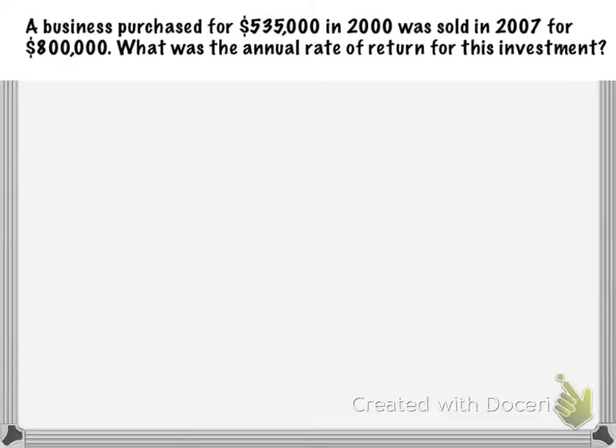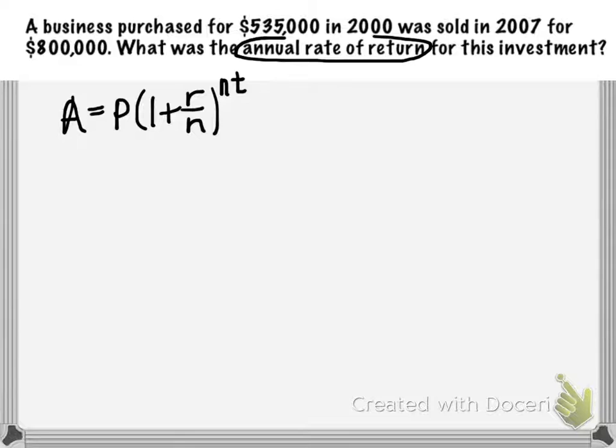We've been working with the compound interest formula: A = P(1 + r/n)^(nt). Although this is not a compound interest problem, it asks us for the annual rate of return, which is our r value, what we were considering our interest rate before.